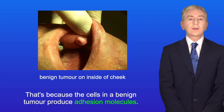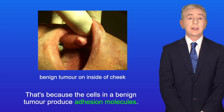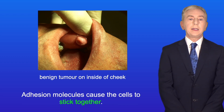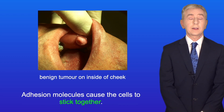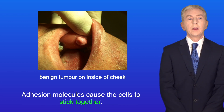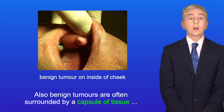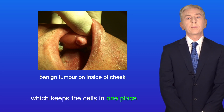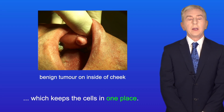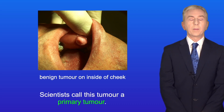The cells in a benign tumour produce adhesion molecules, which cause the cells to stick together. Also, benign tumours are often surrounded by a capsule of tissue which keeps the cells in one place. Scientists call this a primary tumour.